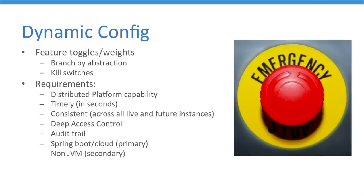What are our requirements for dynamic config? It needs to be a distributed platform capability. It needs to be timely — when you make a change, it needs to go through in milliseconds or seconds at most. It needs to be consistent — all current and future instances have to have the same configuration once you make a change. This is something that in my past experience has bitten us quite a bit. Again, deep access control and an audit trail, because you're dealing with PII apps and PCI apps. Not only do you need to know who made the change and when, but when that change was actually consumed by your instances.